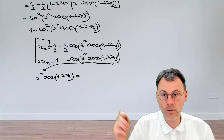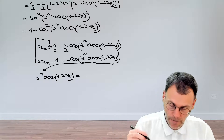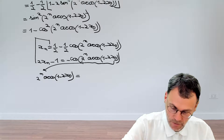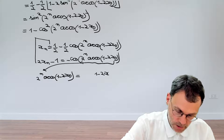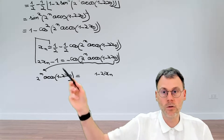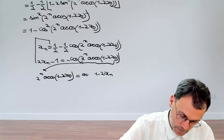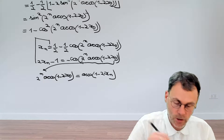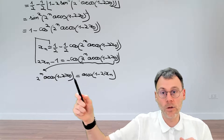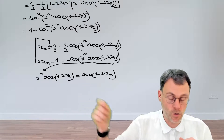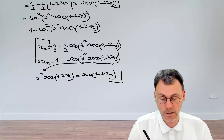we can write that two to the power of n times arc cosine of one minus two x₀ equals arc cosine of one minus two x_n. So we now have an expression for this two to the power of n argument, which is just a simple arc cosine that we'll be able to use to cancel with cosine.